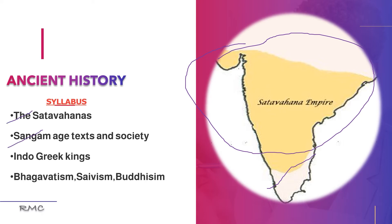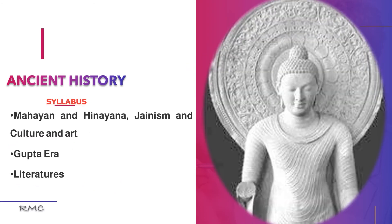Next is the Sangam Age, which is basically related to Tamil Nadu. After that are the Indo-Greek kings, located in the northwest part of India. Then we cover different religions: Bhagavatism, Shaivism, and Buddhism. Buddhism has two branches — Mahayana, where idol worship is allowed, and Hinayana, where idol worship is not allowed. Jainism also has two branches: Digambara and Shvetambara. We will study their culture and art.